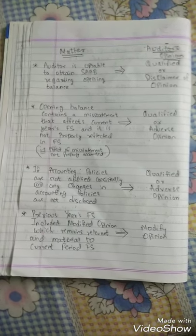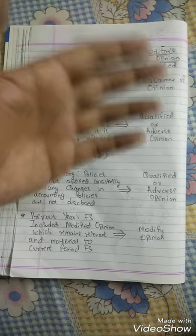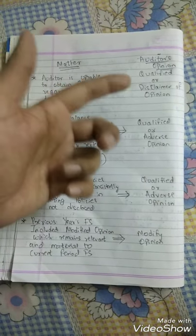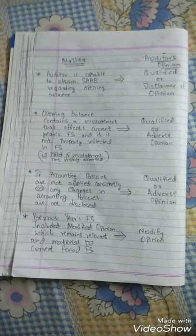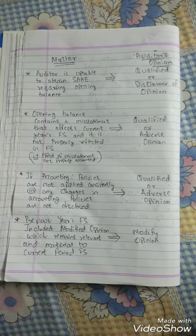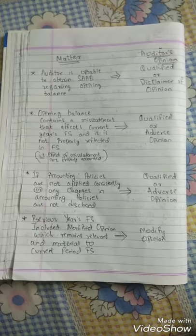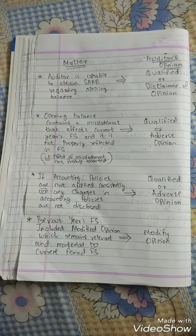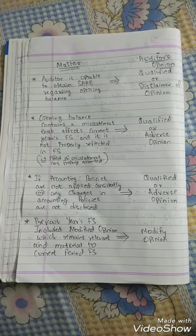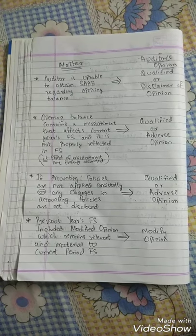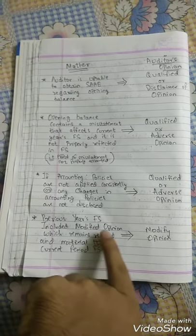This is read with SA 705. First, if audit evidence regarding the opening balance cannot be obtained, issue either a qualified opinion or a disclaimer — if the effect is pervasive, issue a disclaimer; if not pervasive, issue a qualified opinion. Second, if the opening balance contains a misstatement affecting the current period and management has not corrected it — if the effect is pervasive, issue an adverse opinion; if not, issue a qualified opinion. Third, if accounting policies are not consistently applied or changes are not disclosed — adverse if pervasive, qualified if not. Finally, if the predecessor auditor gave a modified opinion, we also need to modify our opinion, and what opinion we give depends on the predecessor auditor's opinion.